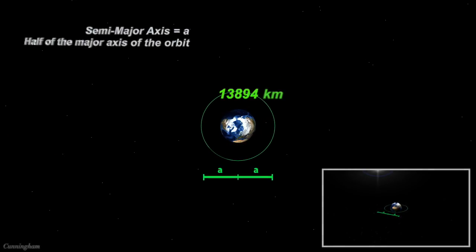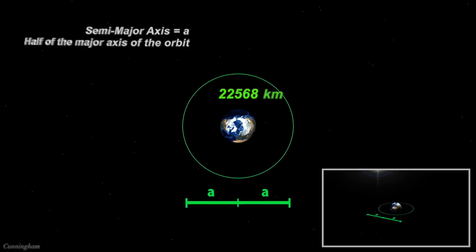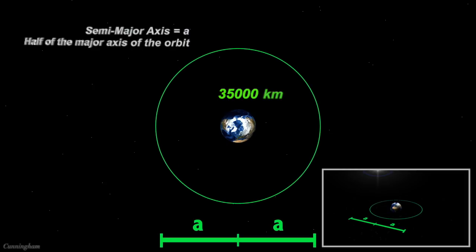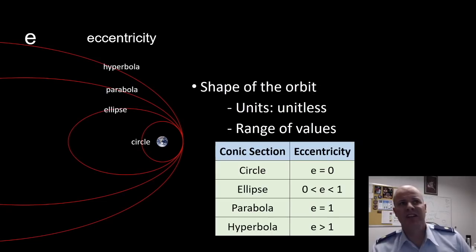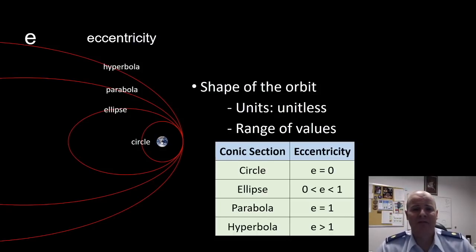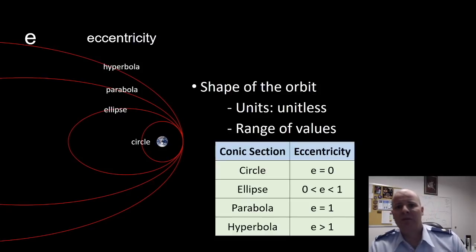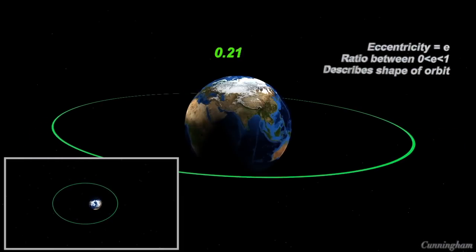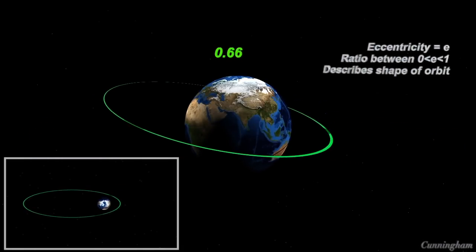This is what it looks like for our orbit's semi-major axis to change. Our eccentricity, which describes the shape of our orbit, is actually unitless, but it can have a range of values. For a circle, our eccentricity, or E, is equal to zero. For an ellipse, it can vary between zero and one. For a parabola, it's exactly equal to one, and for a hyperbola, it's greater than one.